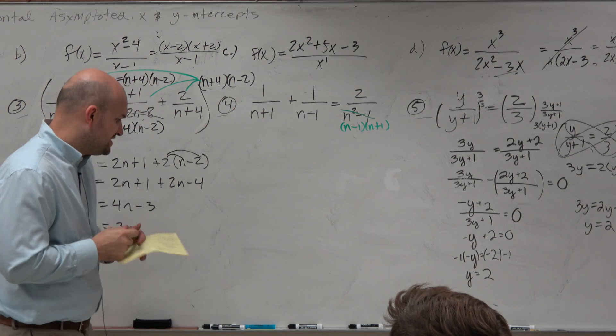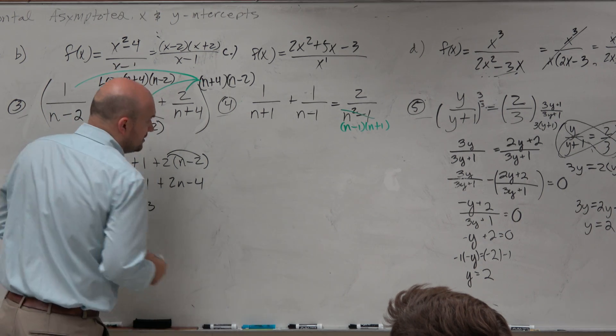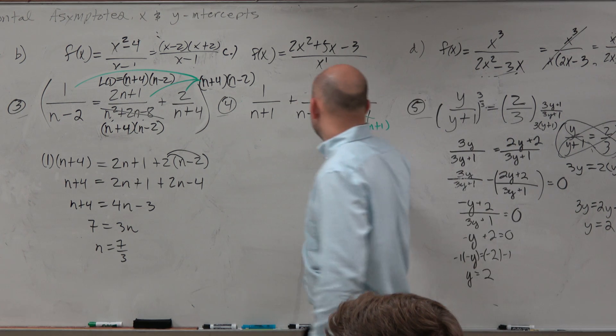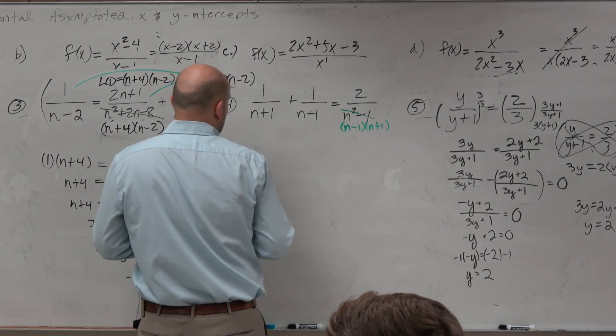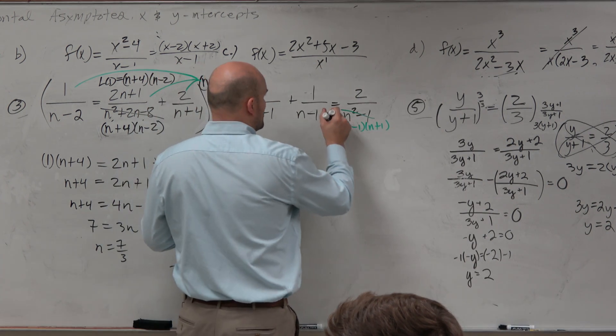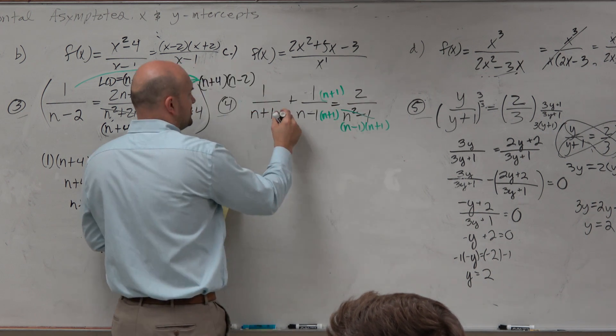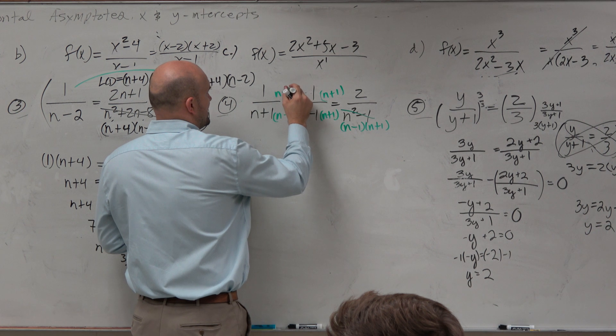So what we're going to do in this example is just get everything to have the common denominator. So to get this to be the common denominator, I need to multiply by n plus 1 over n plus 1. Here, I need to multiply by n minus 1 times n minus 1.